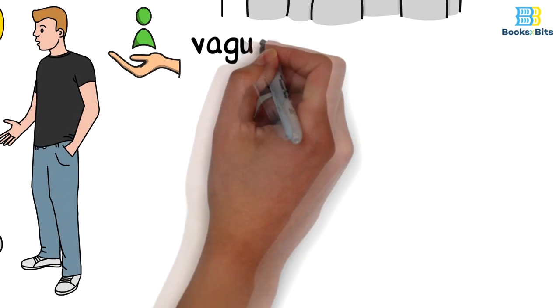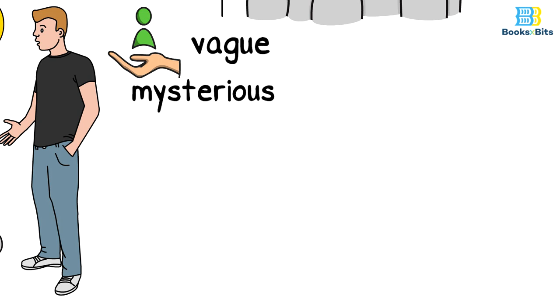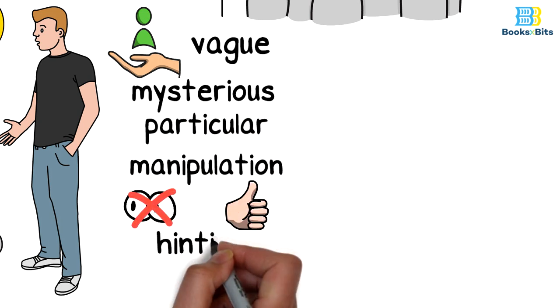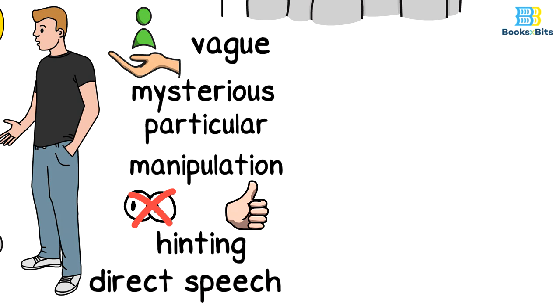And because the green person is somehow vague and mysterious, he also uses particular manipulation methods that may not arouse attention. He prefers hinting over direct speech and sows the seeds of the idea and waits without any haste or hurry.